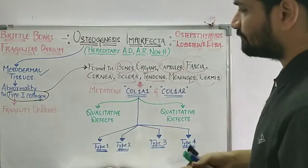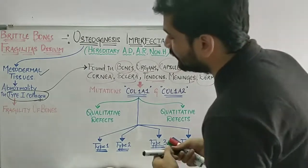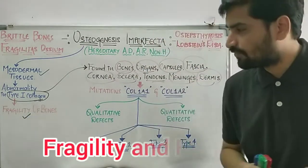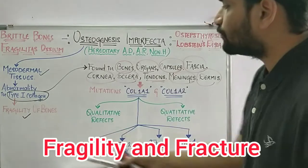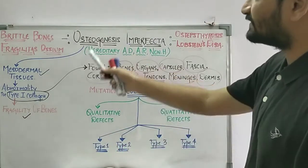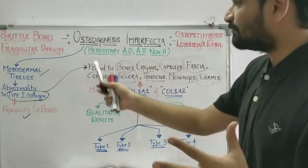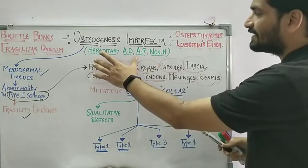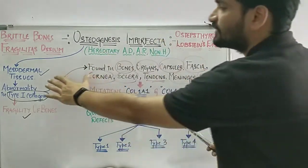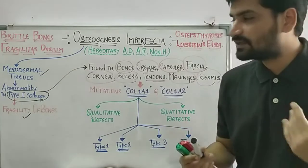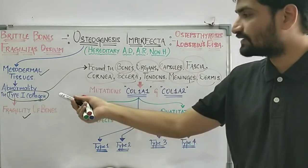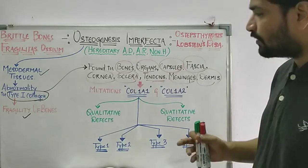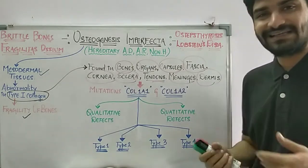There will be an abnormality of type 1 collagen, which will directly lead to fragility and fracture of bones. The main understanding is that osteogenesis imperfecta is a hereditary or non-hereditary condition affecting mesodermal tissues, with abnormality in type 1 collagen leading to fragility of bones.